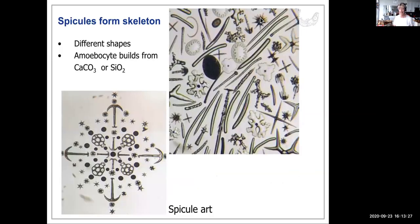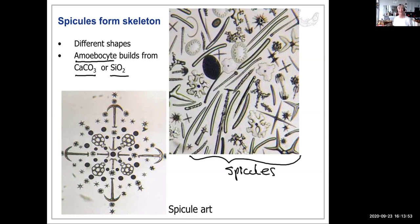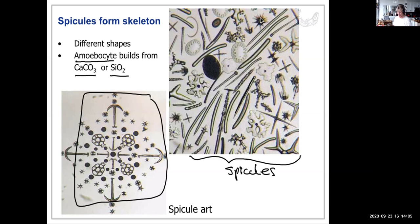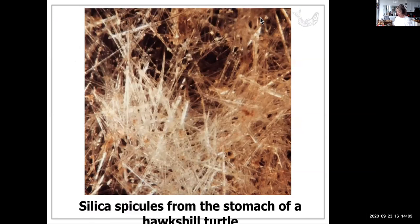Sponges have a skeleton built by amoebocytes from either calcium carbonate or silica, shaped into spicules. The hawksbill turtle eats sponges but cannot digest the silica, so spicules accumulate in its stomach. Because sponges are their food source, this apparently doesn't kill the turtles.